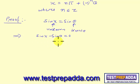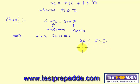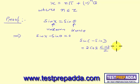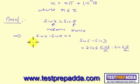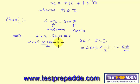Now use the sum-to-product transformation. We apply the formula sin C − sin D = 2 cos((C+D)/2) · sin((C−D)/2). Substituting, we get 2 cos((x+θ)/2) · sin((x−θ)/2) = 0.